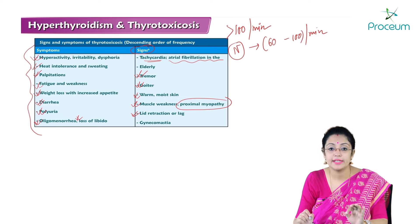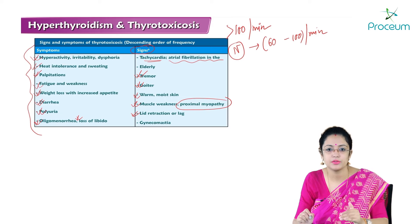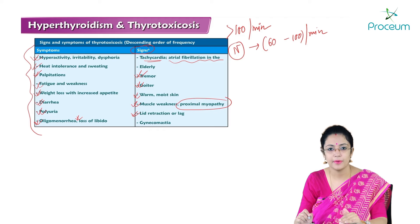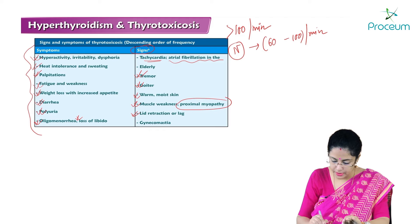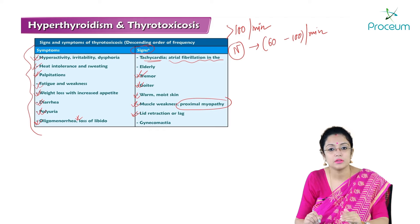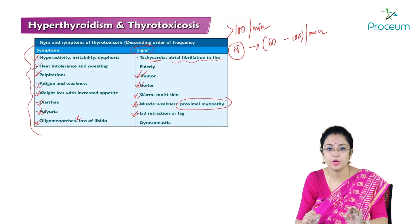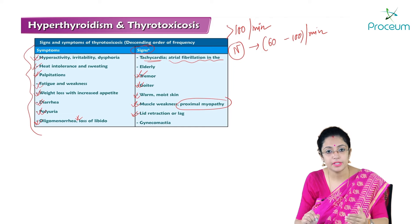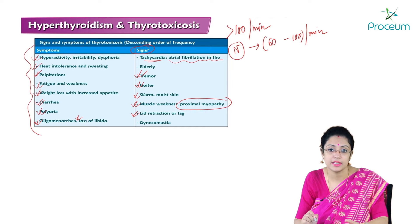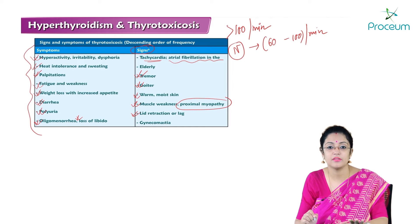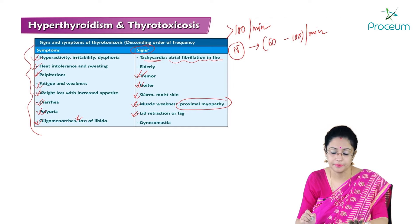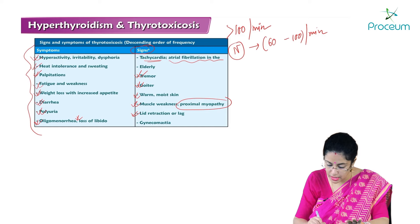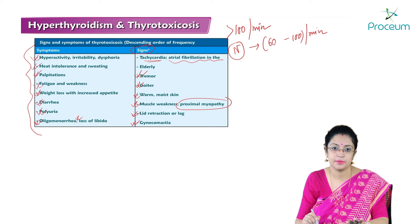There may be lid retraction or lid lag, also known as ophthalmopathy — thyroid ophthalmopathy or Graves ophthalmopathy, which has many typical signs that will be discussed separately. Gynecomastia may also occur. These are the typical signs and symptoms in a patient of hyperthyroidism and Graves disease.